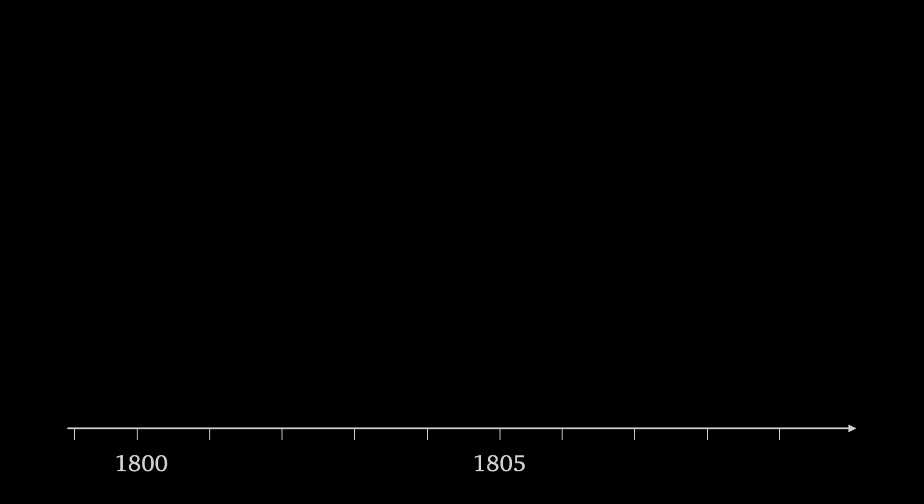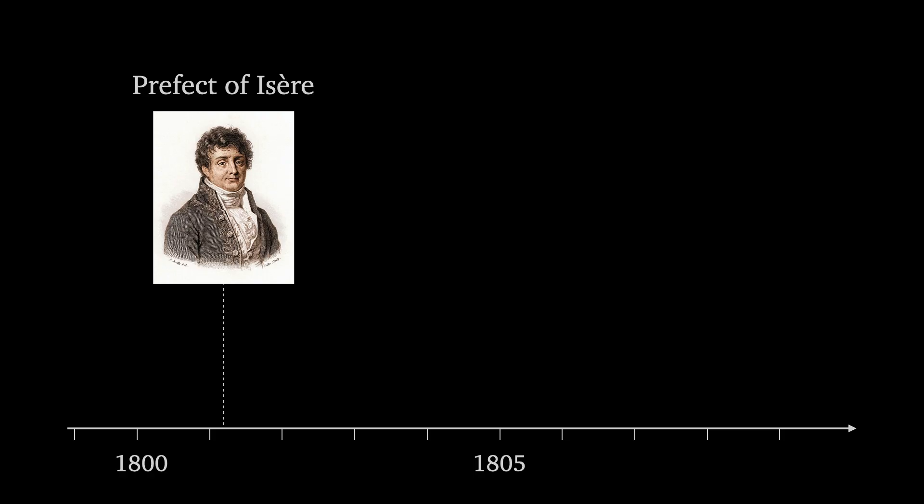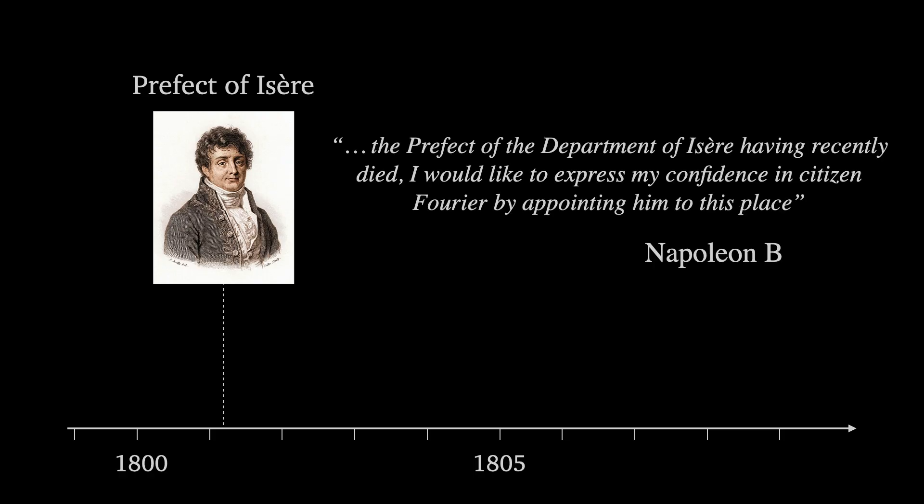When he finally got back to France, about three years later, Fourier was given another powerful political position as prefect of his heir, handed to him by Napoleon. But more importantly for us, this is where he started work on what would become some of the biggest ideas in mathematics history.